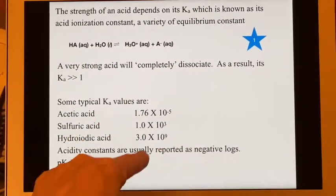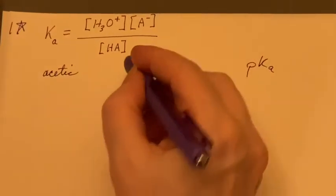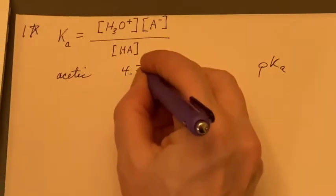So if we take these numbers and we go ahead and we figure out what the pKa is for them, when I do the acetic acid, I'll get 4.75.